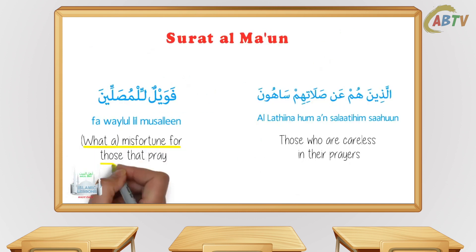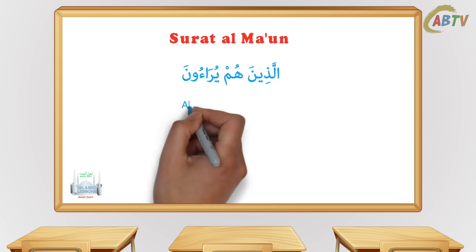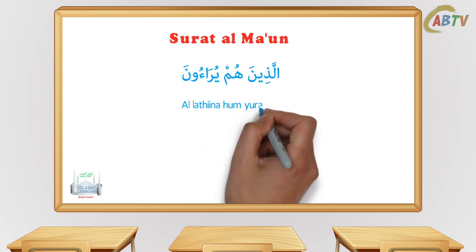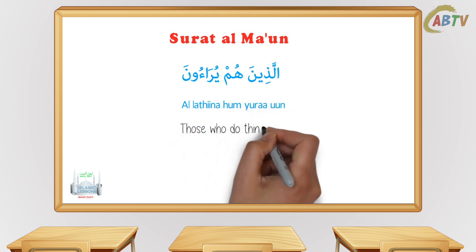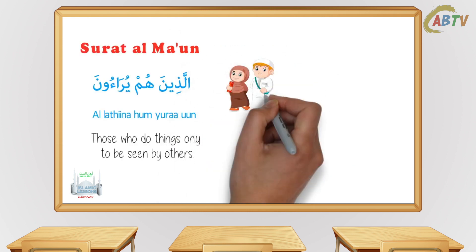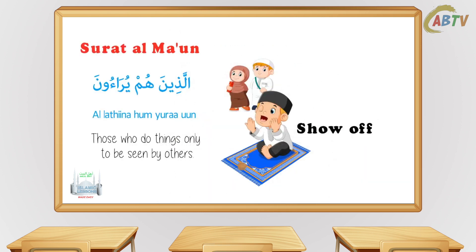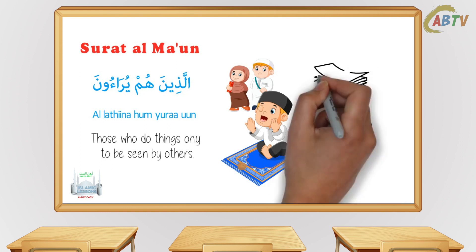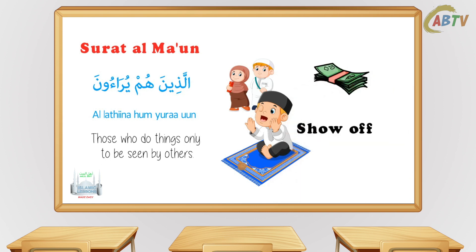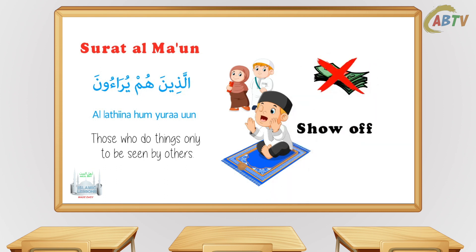So Allah says what a misfortune for those that pray. The next verse says: 'Alladheena hum yuraa'oon' — those who do things only to be seen by others. So for example, they will only pray in front of others to show off, or they will only pay some money to the poor in front of others to look good. But they will never help or pray when no one is looking.